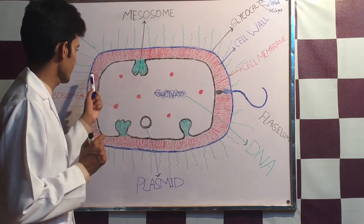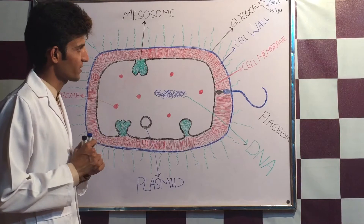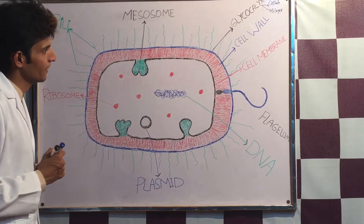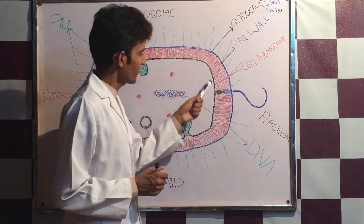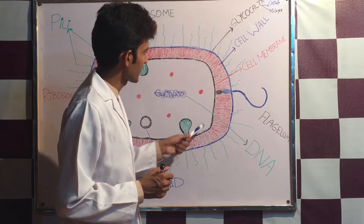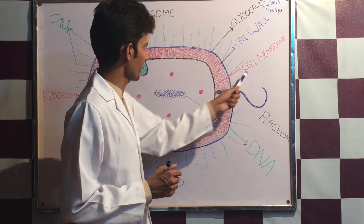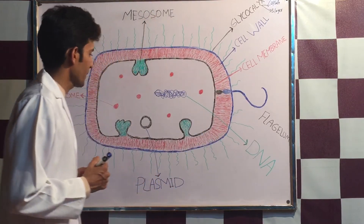In gram-negative bacteria, the cell wall is thin because of a low component of peptidoglycan. The black one is called the cell membrane.